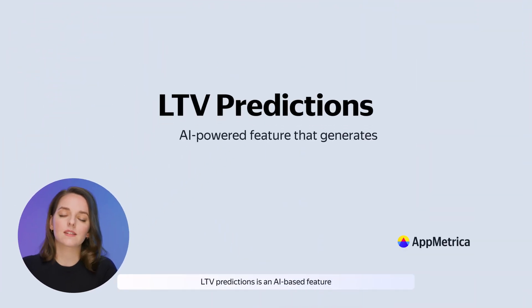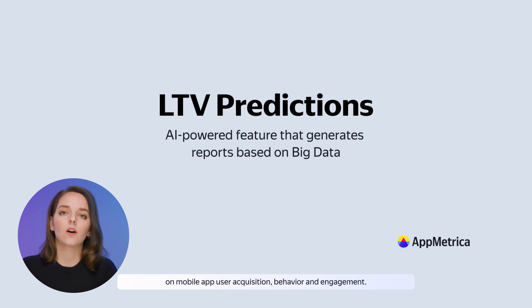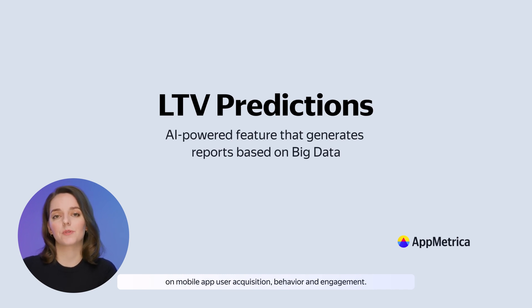LTV Predictions is an AI-based feature that generates a game-changing report based on massive amounts of data on mobile app user acquisition, behavior and engagement.